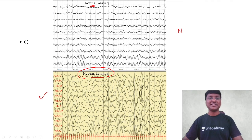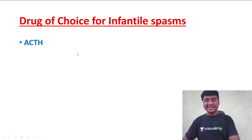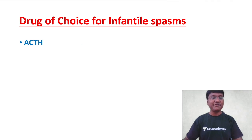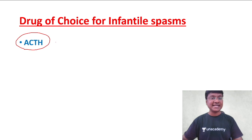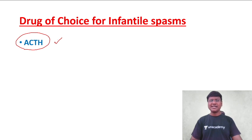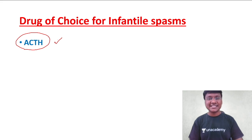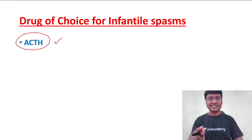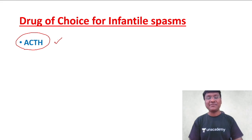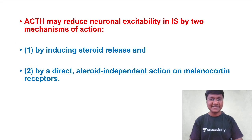The drug of choice in infantile spasms is ACTH, that is adrenocorticotrophic hormone — everyone is aware of that. But the extra edge I will discuss in this session is: what is the mechanism of ACTH? Why and how does ACTH help in infantile spasms?